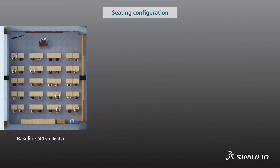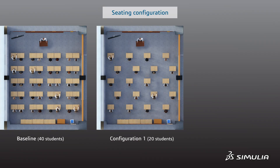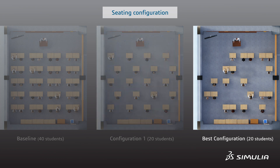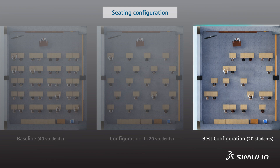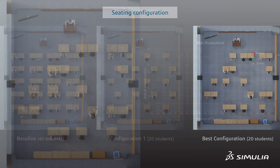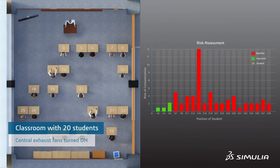Another strategy is through seating arrangements. By using engineering methods typically used to improve performance and behavior of products, it's possible to automatically create numerous classroom layouts and then test those configurations to determine which ones provide the best possible situation to prevent students from potentially contaminating each other.